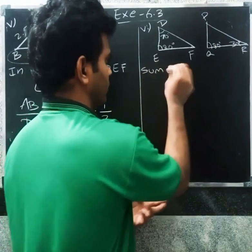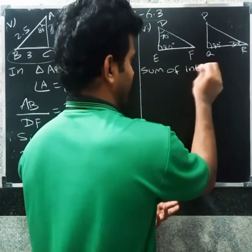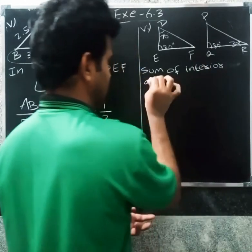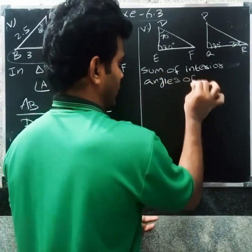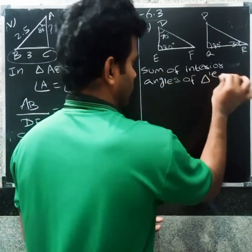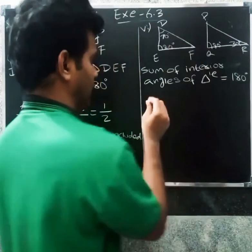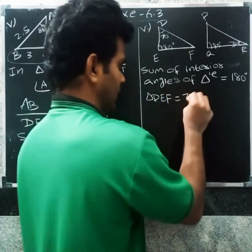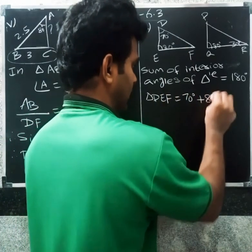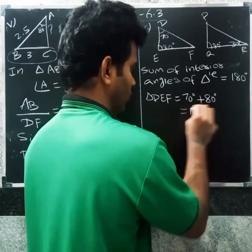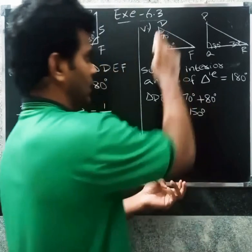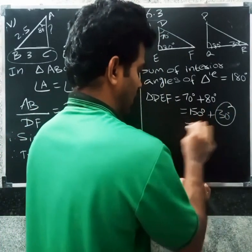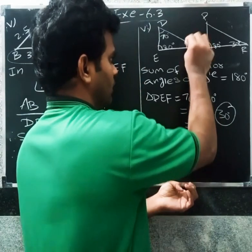Sixth question: sum of interior angles of a triangle equals 180 degrees. For triangle DEF: 70 degrees plus 80 degrees equals 150 degrees, so the third angle is 30 degrees.